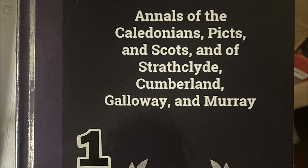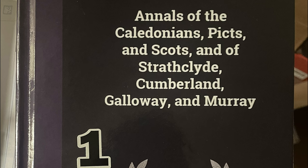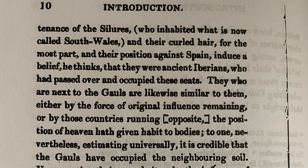Now we're looking at Joseph Rickson's book entitled Annals of the Caledonians, Picts and Scots, and of Strathclyde, Cumberland, Galloway and Murray. Looking at page nine, we focus on the bottom portion where it says after 'Germanic' — it mentions the swarthy countenance — going into page ten of the Silures, who inhabited what is now called South Wales. It gives a detailed description: curled hair, for the most part. Their position against Spain induces a belief that they were ancient Iberians who had passed over and occupied these seats.